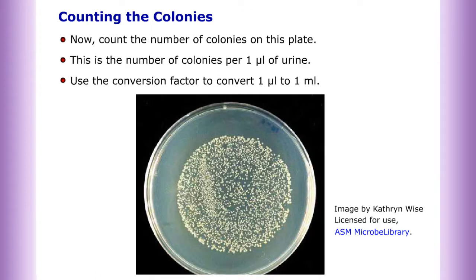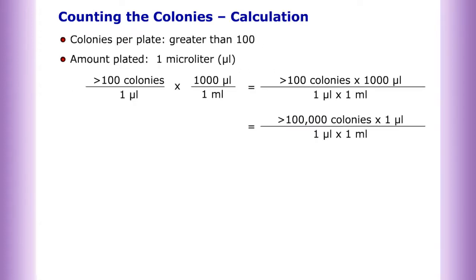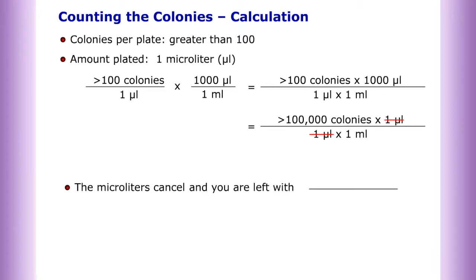Count the number of colonies on this plate — this is the number of colonies per one microliter of urine. Use the conversion factor to convert one microliter to one milliliter. Calculation: colonies per plate greater than 100, amount plated one microliter — the microliters cancel and you are left with greater than 100,000 colonies per one milliliter.